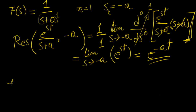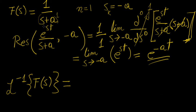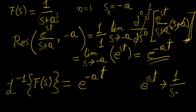The inverse Laplace transform of this function is the sum of the residues. As we saw, we only have one residue, so the inverse Laplace transform is just e to the minus at. This is our function of time. And if you remember the previous video, we saw that if we take the Laplace transform of e to the at, we get 1 over (s minus a). So if we make a negative, it makes sense that the inverse Laplace transform becomes e to the minus at, and the same applies going back: applying the Laplace transform to this gives back the original function.